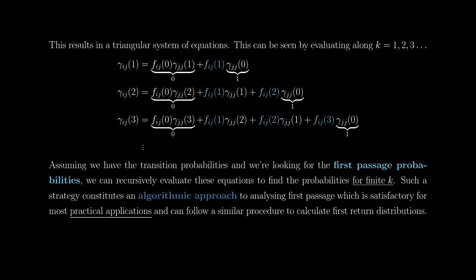For k=2, the probability of transitioning from i to j in two steps decomposes as: first passage in zero steps and the process returns in two steps, or first passage in one step and return in the remaining step, or first passage at the second step and return in zero remaining steps. Plugging in initial conditions and assuming we have the transition probabilities, we can recursively evaluate these equations to find the first-passage probabilities for any finite k.